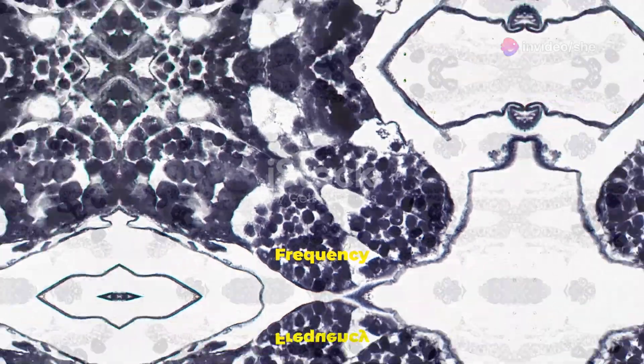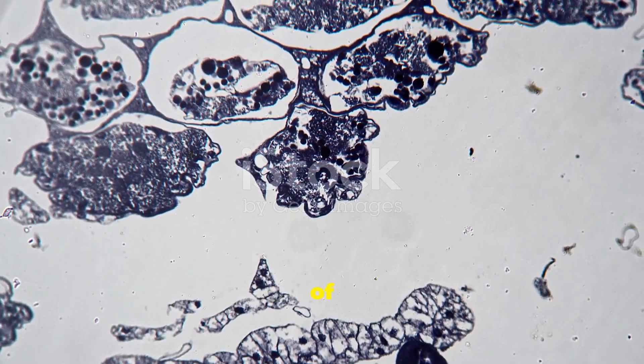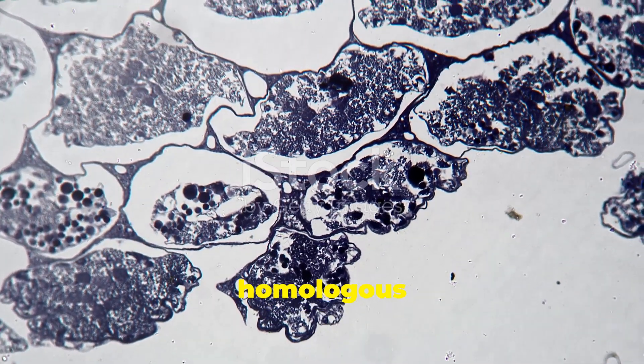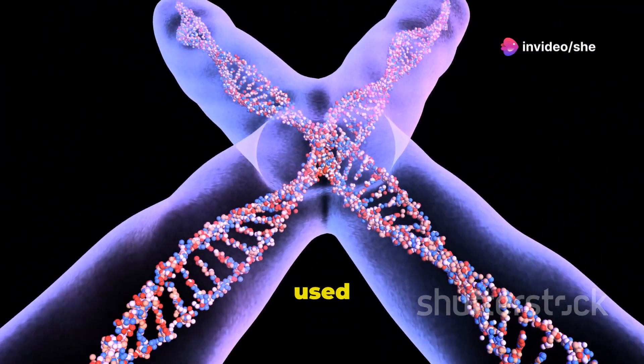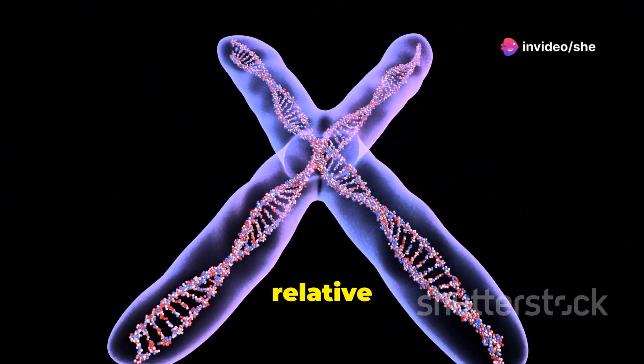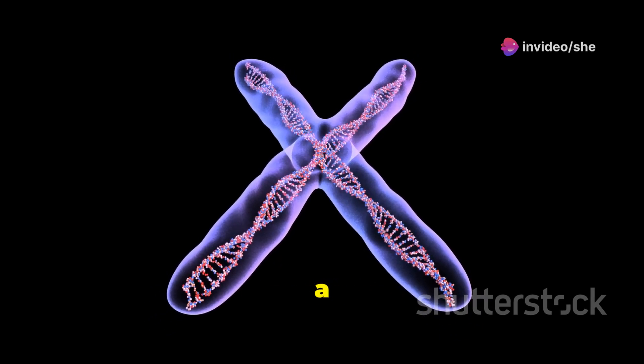Recombination frequency. Recombination: the process of exchanging genetic material between homologous chromosomes during meiosis. Genetic map: recombination frequency can be used to create a genetic map showing the relative distances between genes on a chromosome.